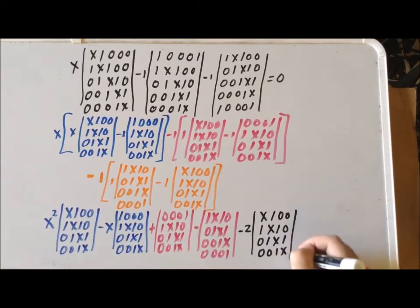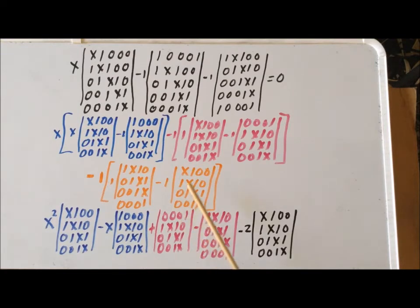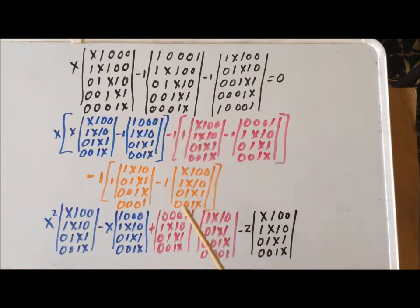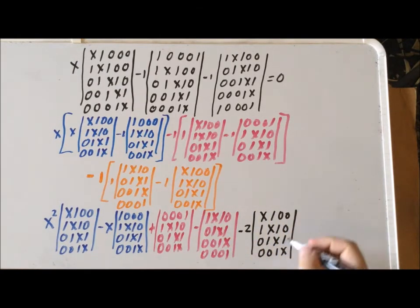We make use of the fact that a particular 4x4 determinant — x, 1, 0, 0, and so on — appears twice in our expansion. Since we have it with coefficients minus 1 and minus 1, we can combine those two terms to form a minus 2 multiplying that determinant. This entire expression is equal to zero.